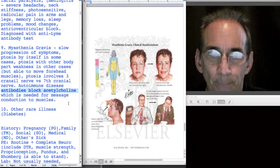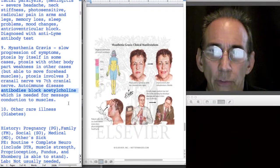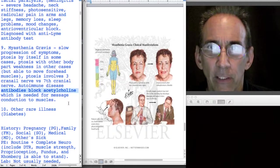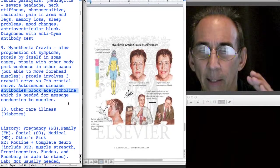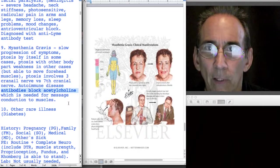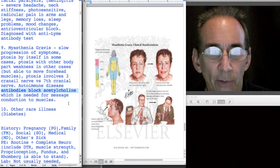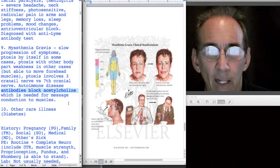If it's myasthenia gravis, we're more likely to see the eyelid coming down. If it goes to different parts of the body, you might see other symptoms such as weakness in a variety of muscles.